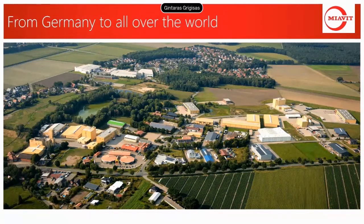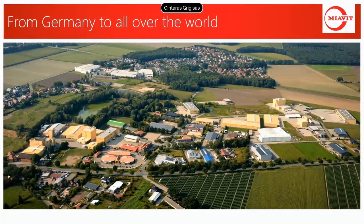Miavit's headquarters is still based in the north part of Germany, where animal production has the highest density and is sometimes even called the Silicon Valley of animal production. In our 14 modern factories, we are able to produce powder products like premixes, feed additives such as toxin binders, antioxidants, coated minerals, and other feed supplements, as well as liquid product solutions — our supplemental feed provided through the drinking lines. More information can be found at www.miavit.de.